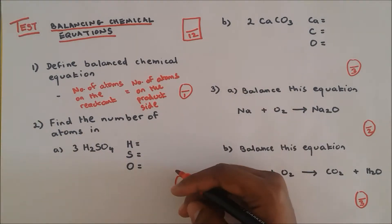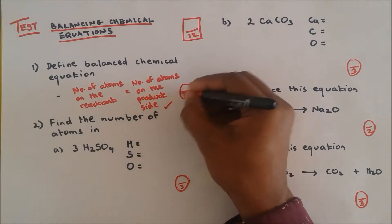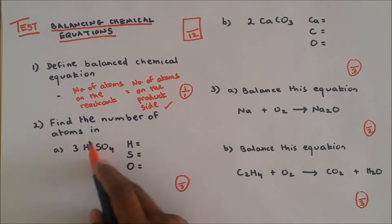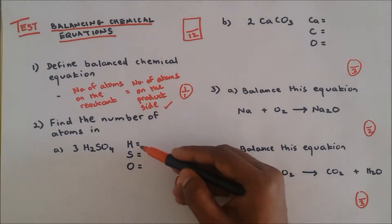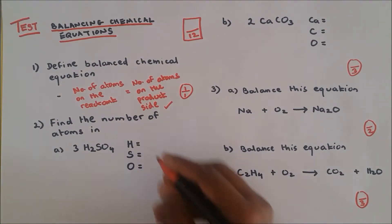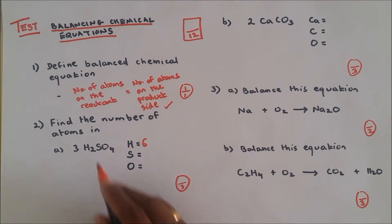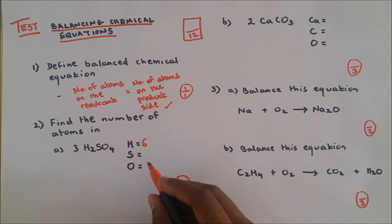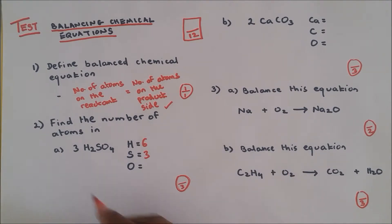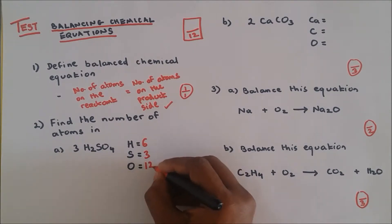Question number two: Find the number of atoms in three molecules of H2SO4. So you have to tell me how many hydrogen do you have over here. It's two times three, so it's six molecules. Sulfur, three times sulfur molecules, so it's three molecules, three atoms of sulfur. And you got four oxygen, but three molecules of H2SO4 will bring us four molecules of oxygen.